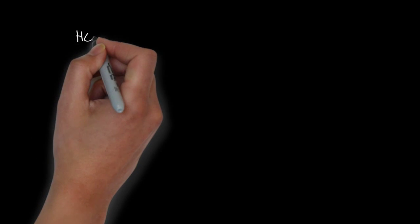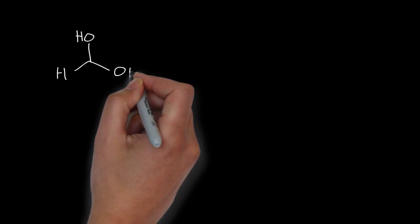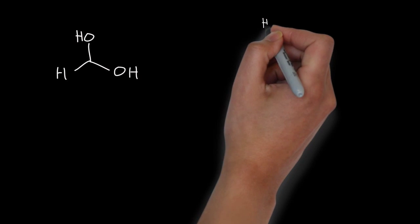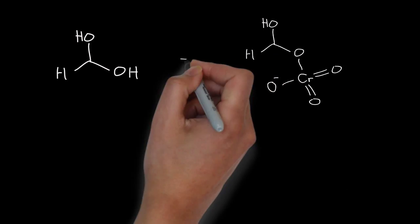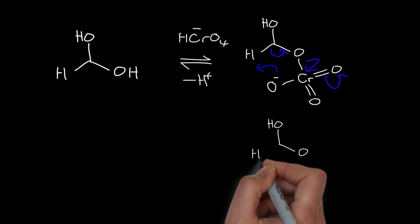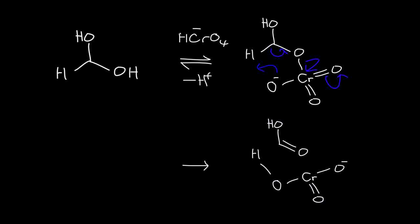Chromium agents act in the same way to oxidize aldehydes to acids. The first step is hydration of the aldehyde. Even a small equilibrium amount will give a hydrate that can then react with the chromium agent, and beta-elimination will give the acid.